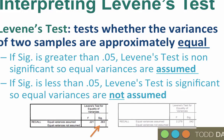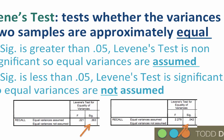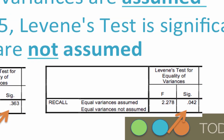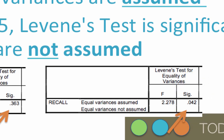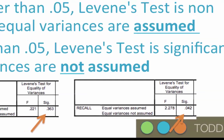On the other hand, if the significance value is less than 0.05 — i.e., it is significant — then the variances are statistically significantly different, so equal variances are not assumed. In this case, if the probability equals 0.042, the assumption of homogeneity of variance has been violated. Therefore, we would interpret the t-test on the bottom line: equal variances not assumed.